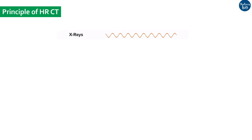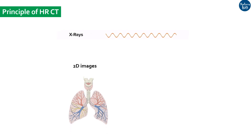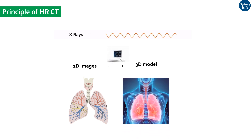HR-CT scanning uses X-rays to scan the chest in the form of 2D sections, and with the help of a computer, all the images are merged to produce a detailed 3D model of lung tissue. Compared to a regular CT scan, high resolution CT gives more precise information about the location of infection or abnormalities in the tissues.